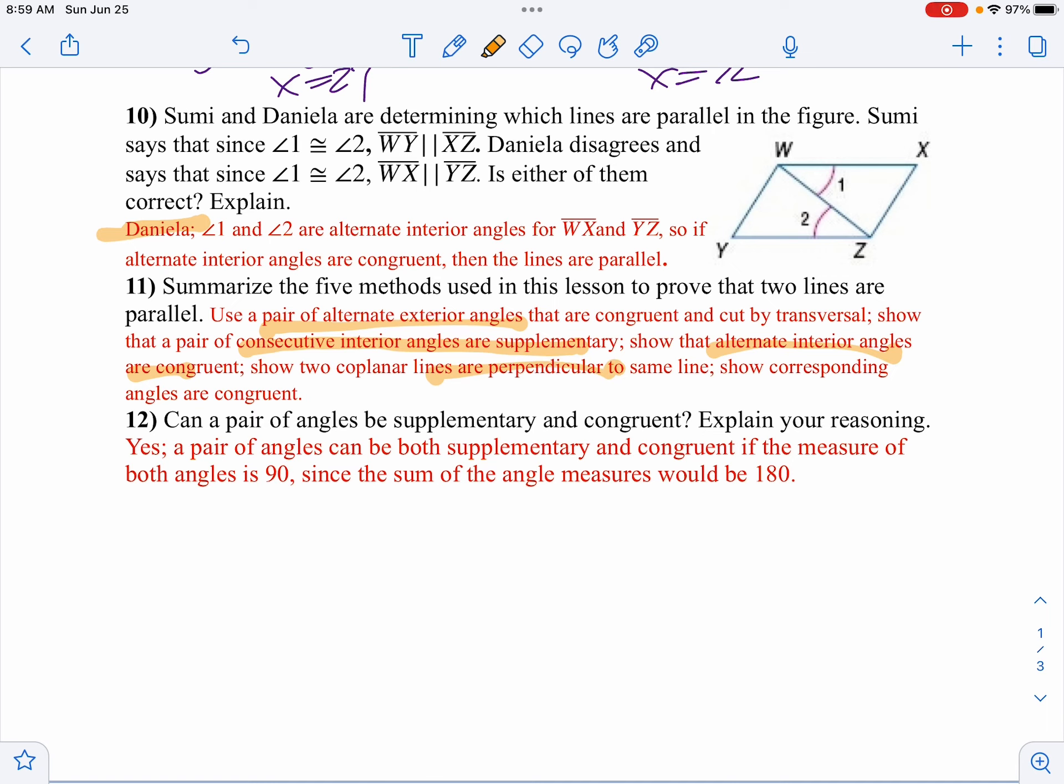On number 12, you can have supplementary angles being congruent as long as they're both 90 degrees.